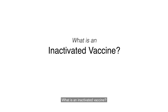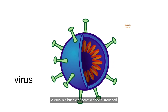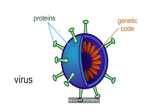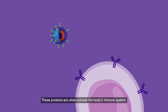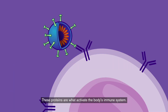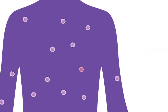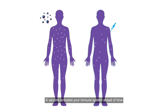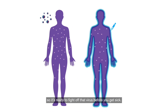What is an inactivated vaccine? A virus is a bundle of genetic code surrounded by a shell of proteins. These proteins are what activate the body's immune system. A vaccine activates your immune system ahead of time, so it's ready to fight off that virus before you get sick.